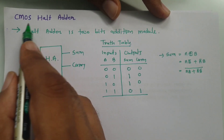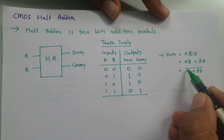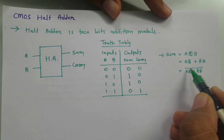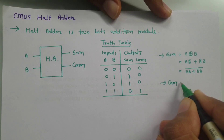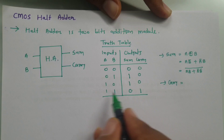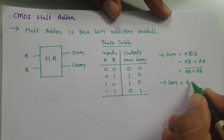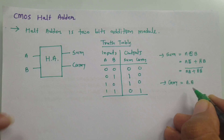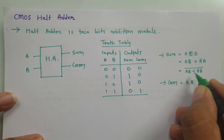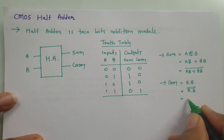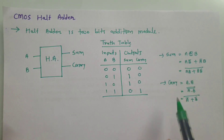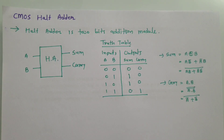We are implementing this with CMOS. Since the CMOS output is inherently inverted, we rewrite Sum as XNOR form with a bar. For Carry, it is an AND operation: Carry = A·B. To avoid an inverter at the output, we apply double bar — using De Morgan's law: Carry = (Ā + B̄)̄.